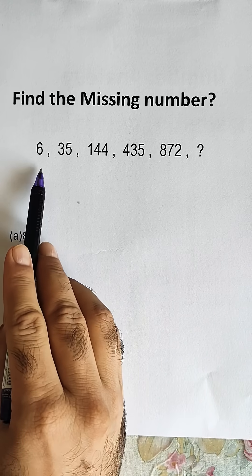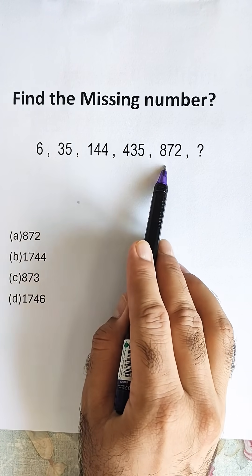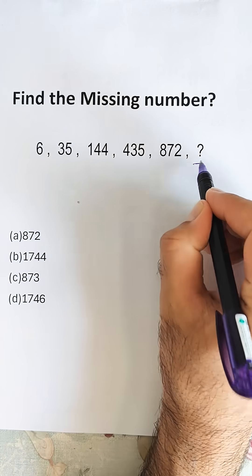We have been given a series: 6, 35, 144, 435, 872, and we have to find this number.